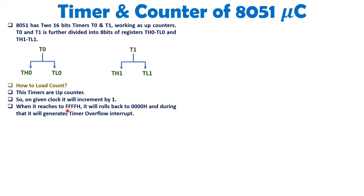When the counter reaches its maximum value — FFFF hex for a 16-bit timer — it will roll back to 0000, and during that rollover it will generate a timer overflow interrupt. We will have two internal interrupts from the timers: one interrupt generated by T0 and the second generated by T1. This overflow interrupt is generated when the count rolls from FFFF back to 0000.